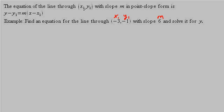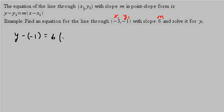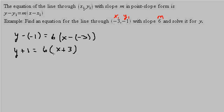So let's find the equation of a line. We have y minus y1, which is negative 1, equals m, which is 6, times x minus x1. So this gives us y plus 1 equals 6 times x plus 3.